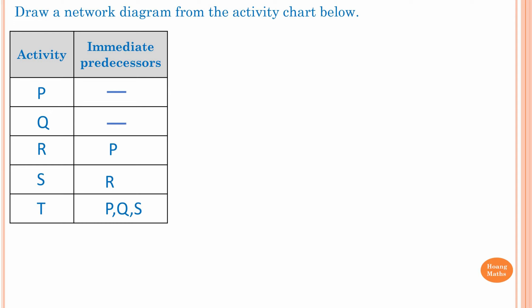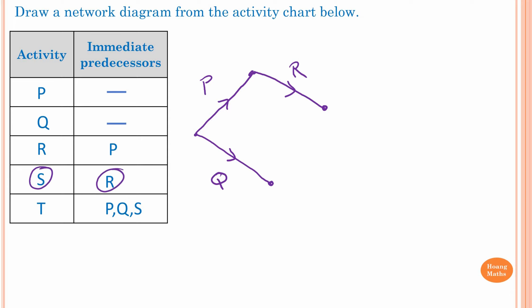We know P and Q have no immediate predecessor, so I draw these first — Activity P and Activity Q. R has an immediate predecessor of P, so I draw that next. This is R. And S has an immediate predecessor of R. Sometimes you have to draw a couple of times to get your diagram correct — it's not always right on the first try. Activity S requires R to be complete, but Activity T requires S, Q, and P to all be complete first. So Activity P, Q, and S must be connected together. We draw Activity S joined with Q.